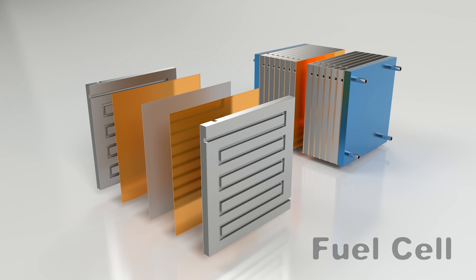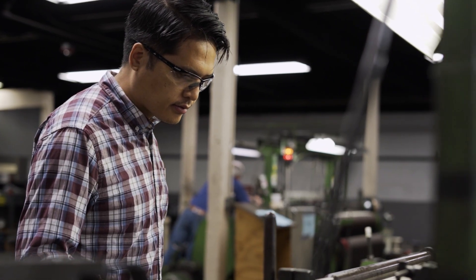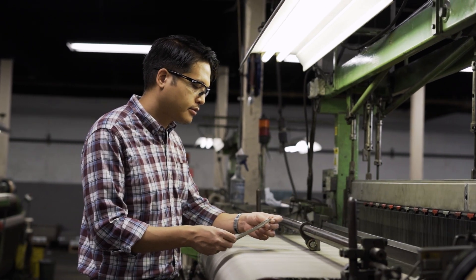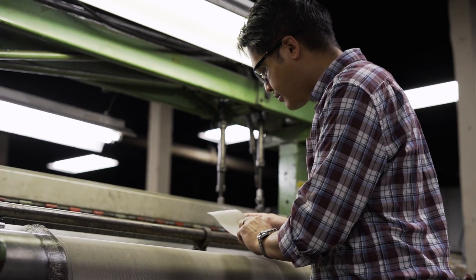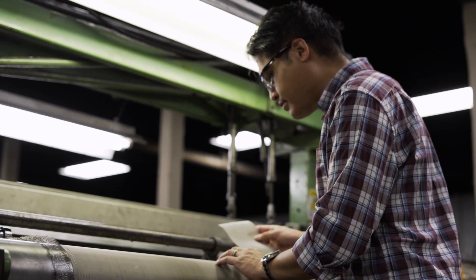Porosity affects the flow of reacting gases — hydrogen and oxygen — through the electrochemical cell. High porosity allows for better gas diffusion, ensuring that these reactants reach the active sites where the redox reactions occur. The porosity of the wire mesh also impacts water management and thermal management of the cell. The void spaces within the wire mesh can help dissipate the heat generated during fuel cell operation, thus preventing overheating and improving overall efficiency.